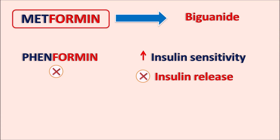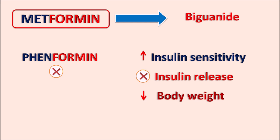Apart from this, metformin also produces weight loss — it reduces body weight. Other drugs like sulfonylureas increase weight, resulting in weight gain. But metformin reduces body weight to some extent, which is why it is preferred in obese patients suffering from type 2 diabetes mellitus.